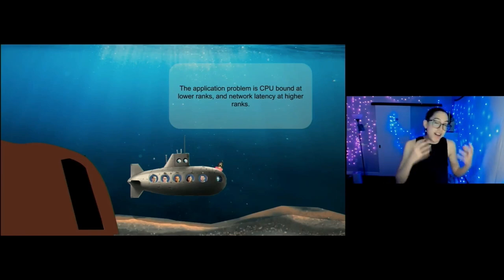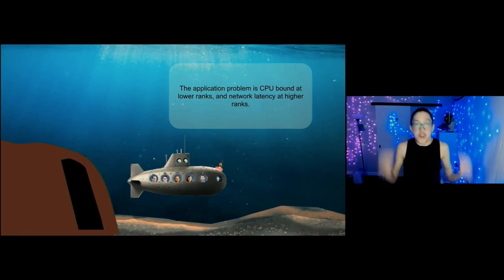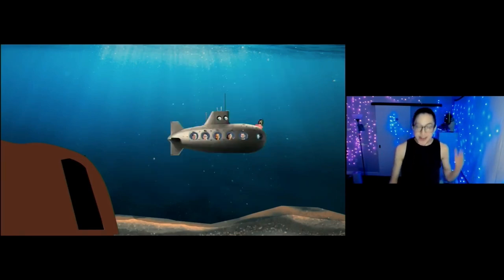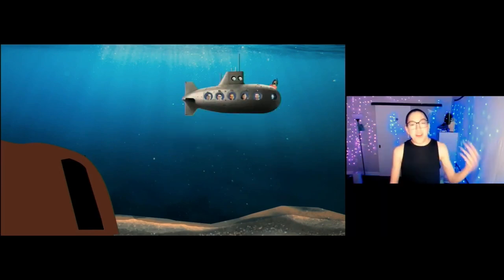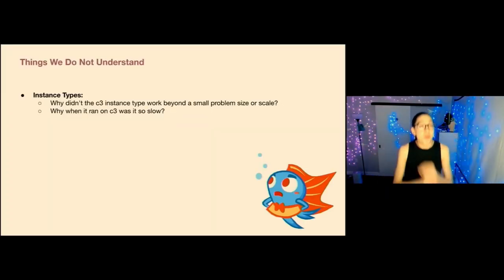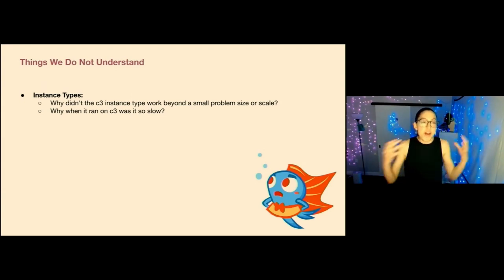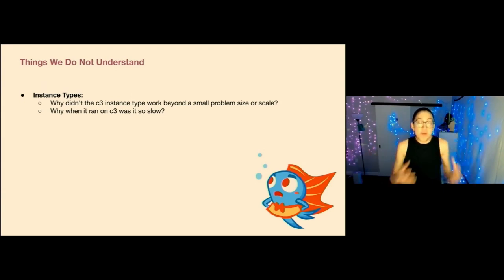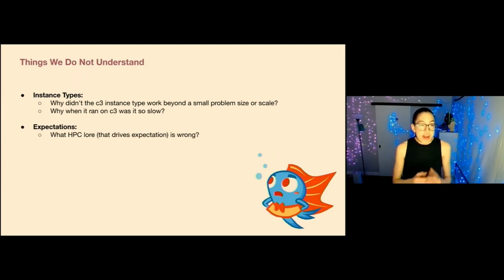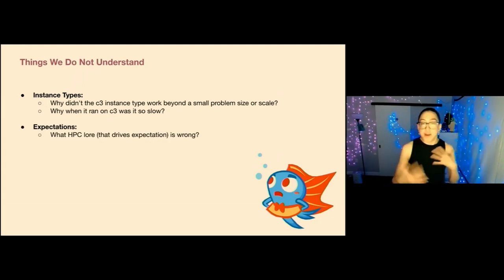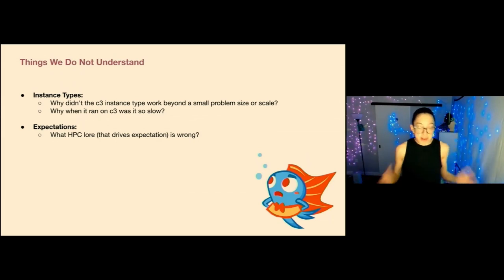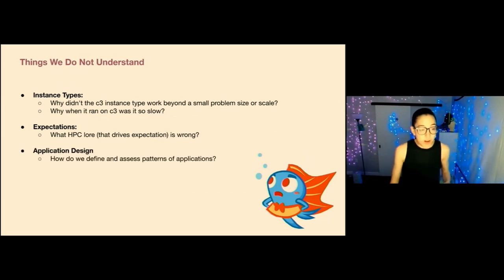At this point we could return to the surface. These are the things we still do not understand: why this particular instance type did not work originally, and we need to better look at our expectations — what lore do all of us carry from our community that might just be entirely wrong? And then application design — how can we take our applications and understand the patterns they need to map them to the right environments?